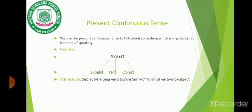Affirmative: subject plus helping verb — which consists of is, are, or am — plus first form of verb, plus ing, plus object.